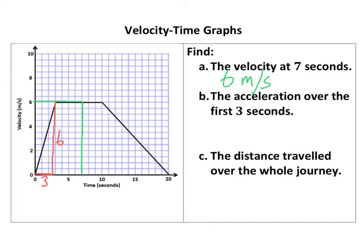and up 6 in that time. So the gradient is the rise over the run, isn't it? So that's going to be 6 divided by 3, and so that's going to be 2 metres per second per second, so we call it per second squared.